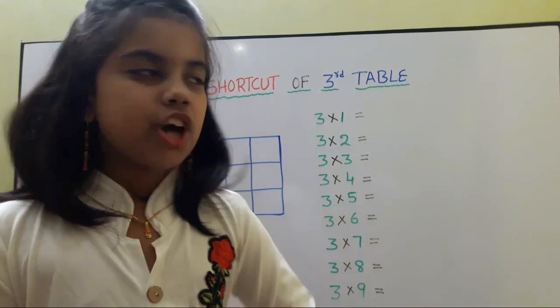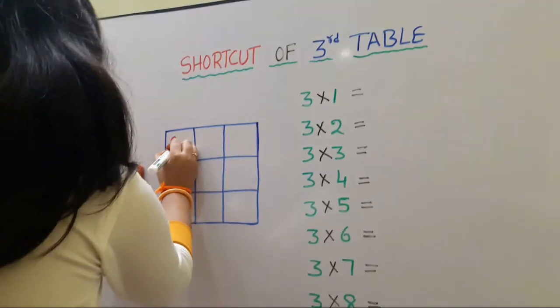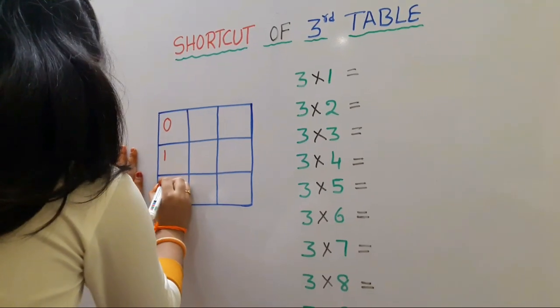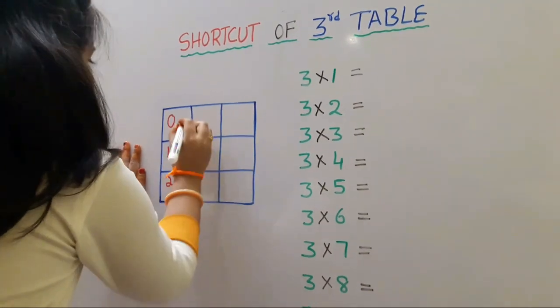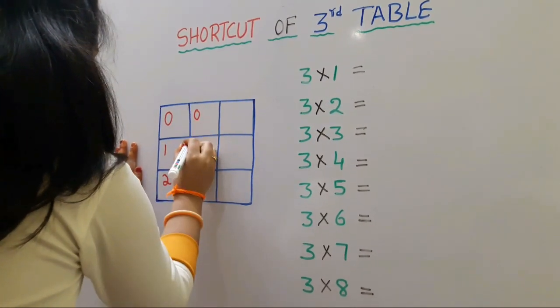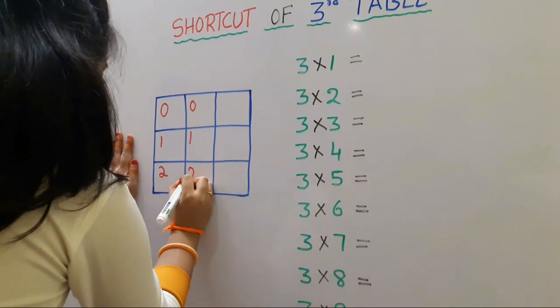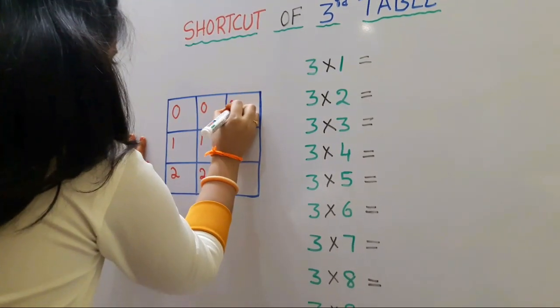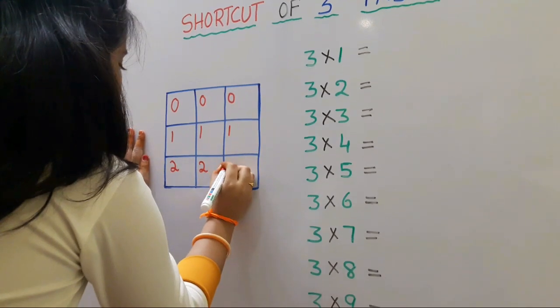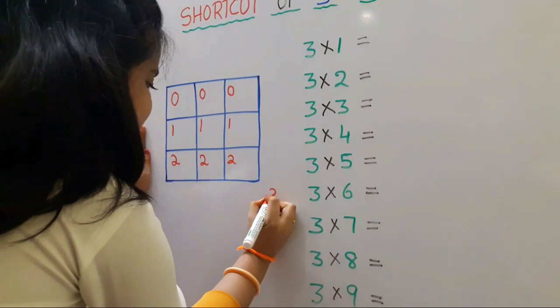First, I'm telling the shortcut for the third table. We should write 0, 1, 2. Again we should write 0, 1, 2. Again we should write 0, 1, 2. Here we should write 3.